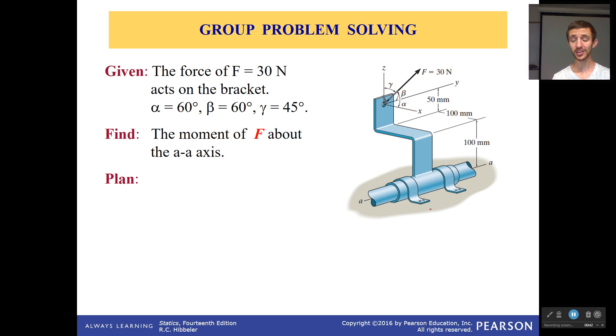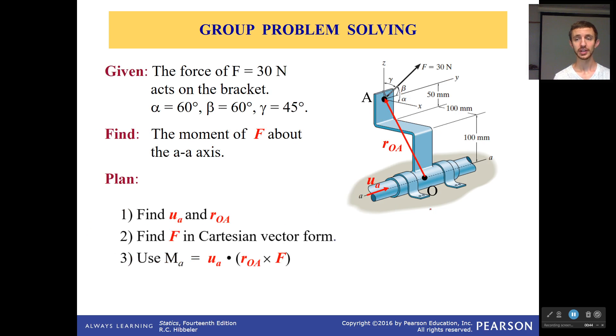So let's try it out. How are you going to do it? Well, first off, you probably need to find the unit vector for the a-axis, and you need to find your position vector. Second, you need to find the force F in Cartesian vector form. And third, you need to take that cross product, the triple product, to do this.